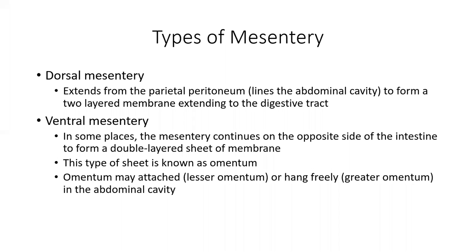Your dorsal mesentery extends from the parietal peritoneum and is a two-layer membrane covering the digestive tract. You also have a ventral mesentery, which is kind of an extension from the dorsal but in the front — a double-layered sheet membrane. This is known as the omentum. The lesser omentum is attached from the inferior side of the liver to the superior side of the stomach. The greater omentum hangs freely like an apron across the abdominal muscles — when we dissect, you'll be able to see this.